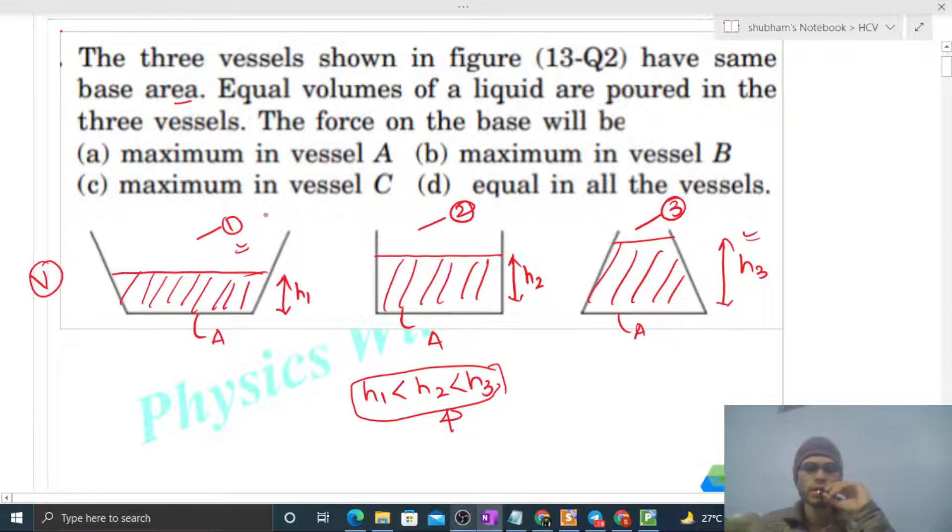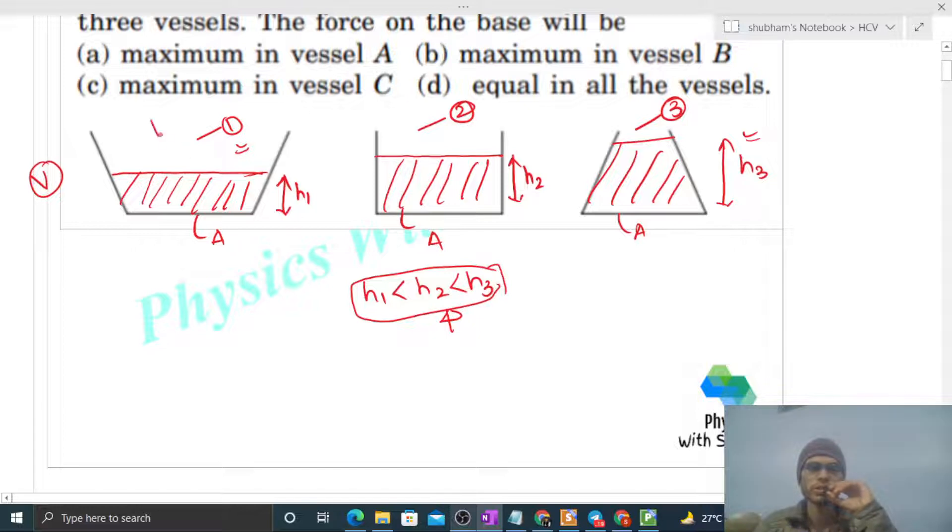Then let's assume the atmospheric pressure is p-naught. So here it will be p-naught, here also p-naught. Now what will be the pressure at the base area here? Let's call it p1. So p1 will be p-naught plus rho times g times h1. What is rho? Rho is the density of this liquid.